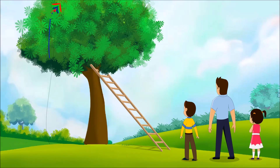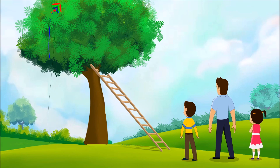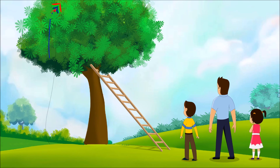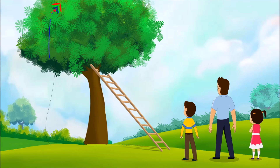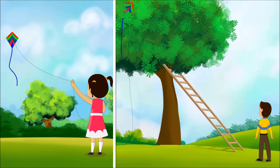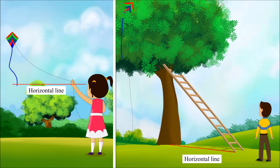Look, father, the ladder forms an angle with the ground. Yes, Abhi. Do you know any interesting fact about this angle? An angle is formed between the horizontal line parallel to the ground and the line of sight of any object. We call it the angle of elevation.